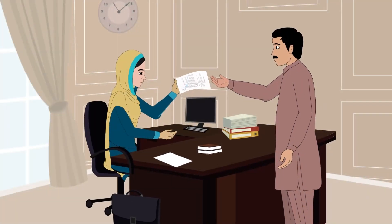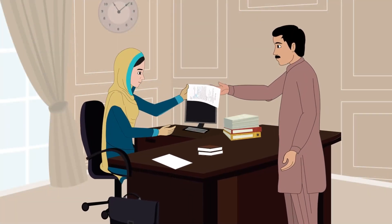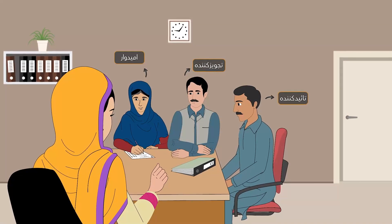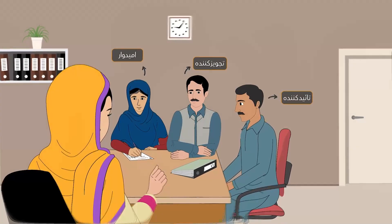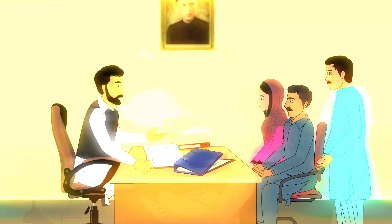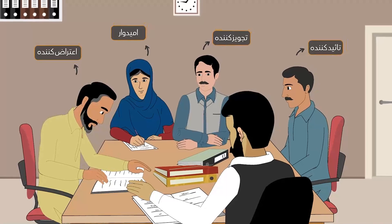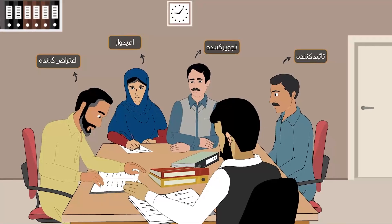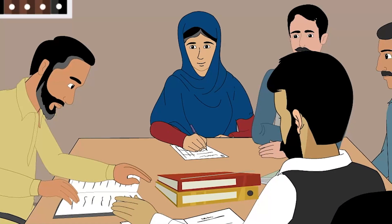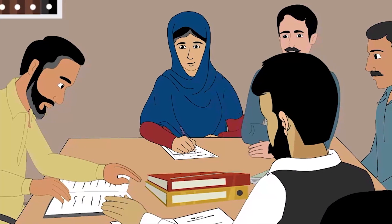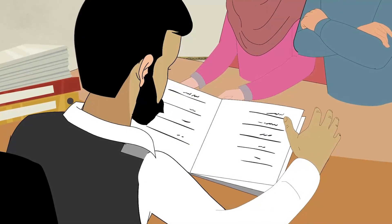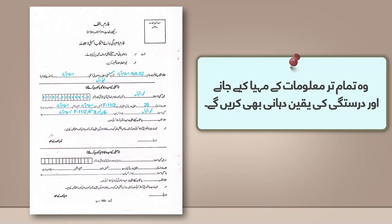The Returning Officers will conduct the scrutiny of nomination papers on the scheduled date. Anyone including the candidates, their election agent, proposer, seconder, representative, or any voter of the same constituency having objected to the nomination papers can participate in this process. The ROs will provide a suitable opportunity for objectors to examine the complete nomination papers, and will conduct a detailed examination in the presence of candidates, their election agents, proposers, or any voter who may have objected.